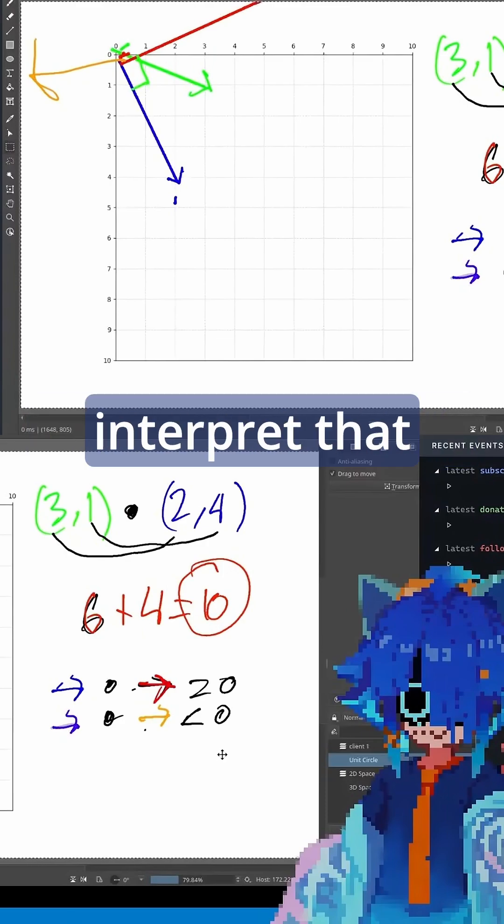So how is this useful? How do we interpret that 10? Well, let's tweak one of these vectors a little bit.